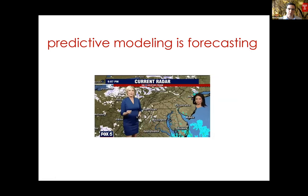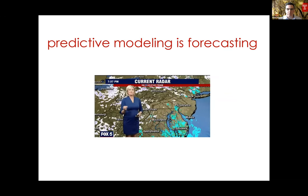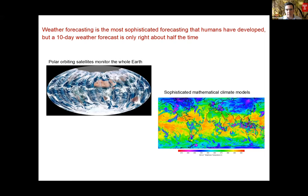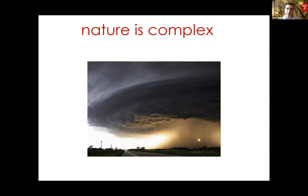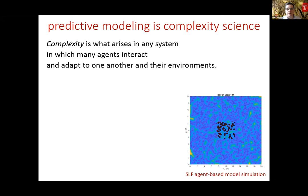Just like any forecast you think about in terms of weather, they are not perfect. Weather forecasting is one of the most sophisticated forecasting technologies ever developed, but even a 10-day weather forecast is only right about half the time. We have all these satellites and sophisticated climatic models, and still can't predict long-term weather forecasts. That's because nature itself is a complex process — a complex system. I use the term complexity in its scientific sense, and inherently predictive modeling is complexity science.